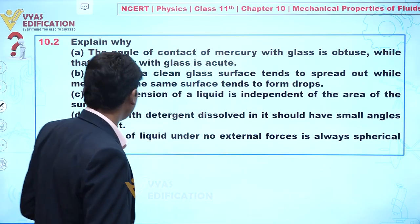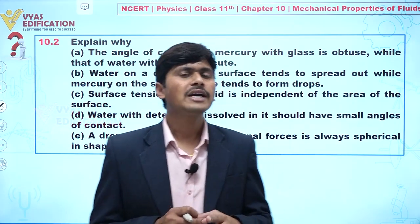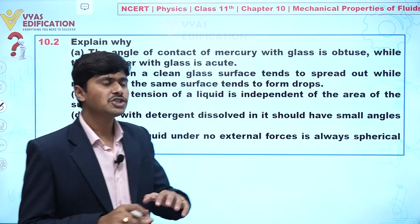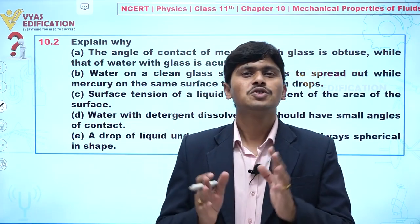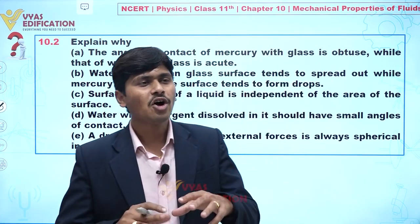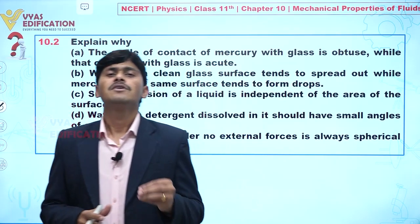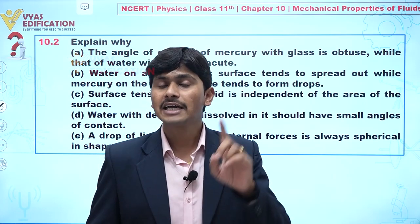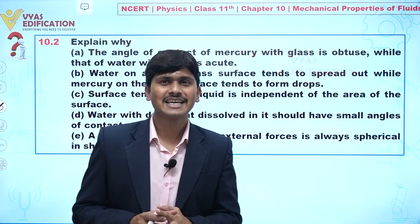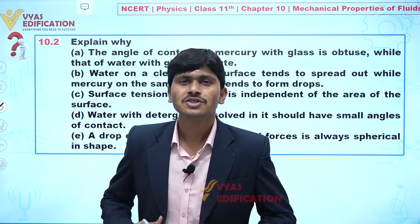For part E: a drop of liquid under no external force is always spherical in shape. If no external force is acting on a liquid drop, its shape is determined by surface tension alone. The property of surface tension is that it always tends to minimize surface area. For a given volume, a sphere has the minimum surface area — that's why a liquid drop under no external force is always spherical in shape.